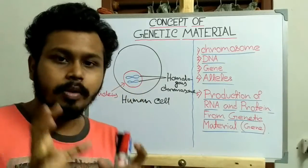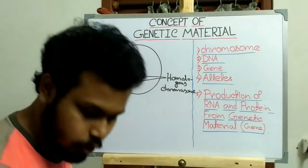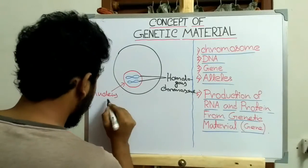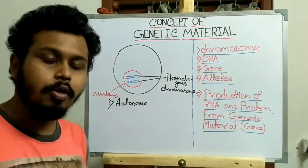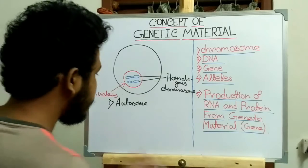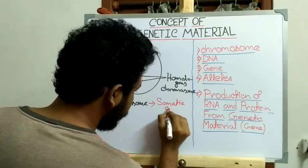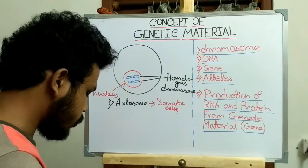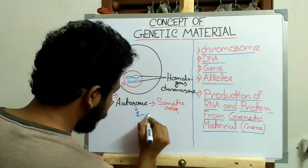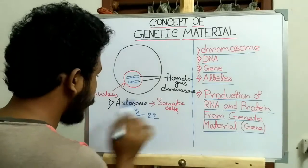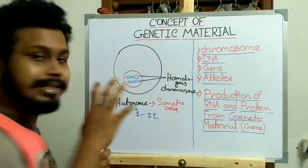Chromosomes are present in two types. The first type is the autosome, also called the body chromosomes, which are present in all somatic cells. Chromosome pairs from 1 to 22 are known as the autosomes, and autosomes are the same in both male and female.